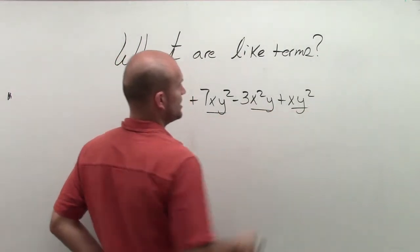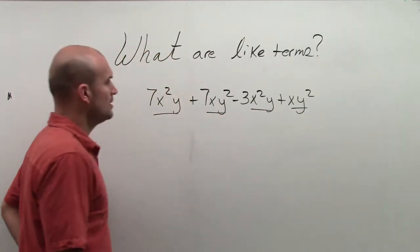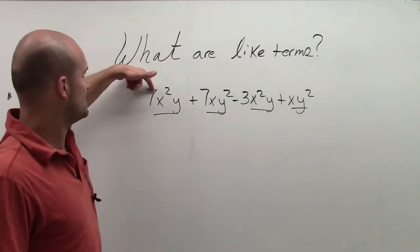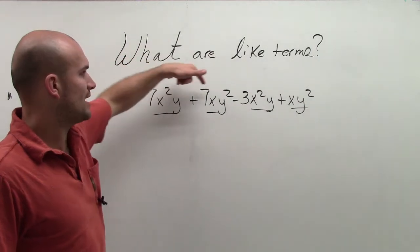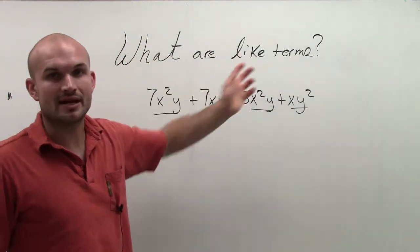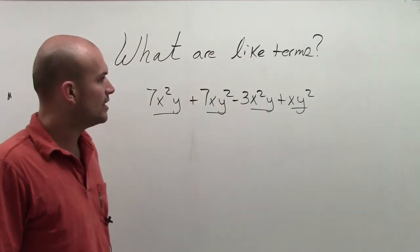term here, term here, term here, right? For each one, I have a number multiplied by a set of variables.